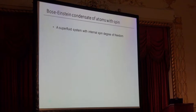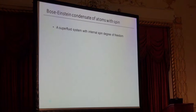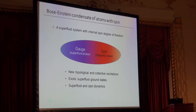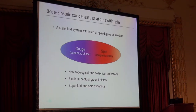As we all know, the atom is a composite particle having a spin. The atomic BEC is a superfluid system with internal spin degrees of freedom. Once you allow the system to reveal its internal beauty, you can have a very interesting opportunity to study superfluidity together with magnetic ordering. Spinor Bose-Einstein condensate has been intensively studied for the last decades, and because of the rich symmetry of the system, one can think of new topological and collective excitations, exotic superfluid ground states, and interesting superfluid and spin dynamics. We have very nice review papers on these activities from Dan Stamper-Kurn, Masahito Ueda, and Dr. Kawaguchi.